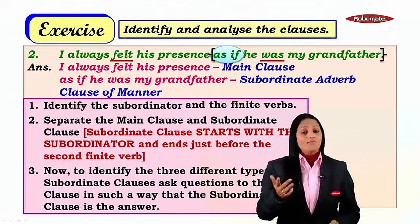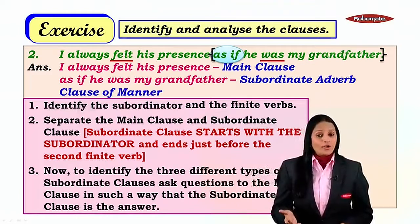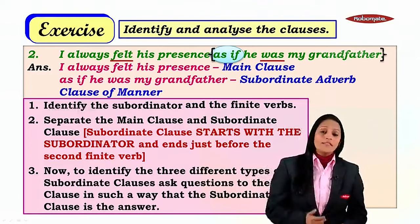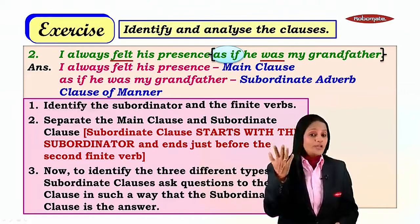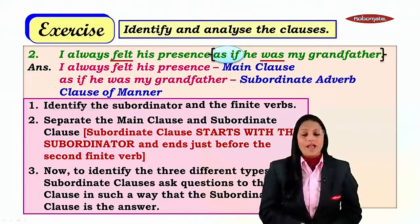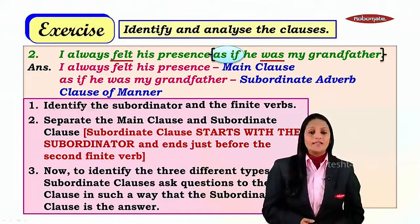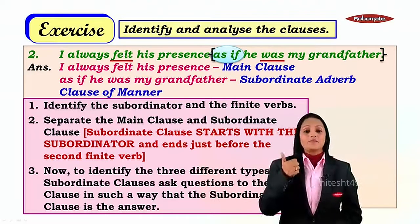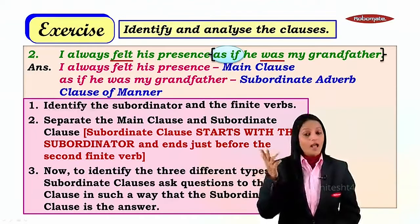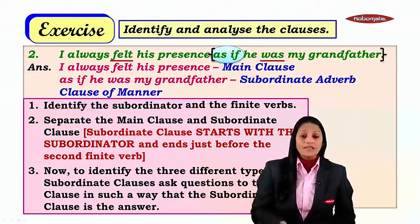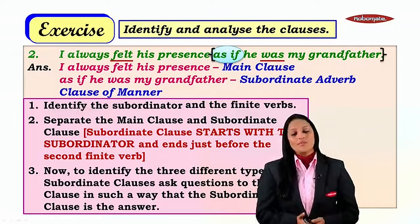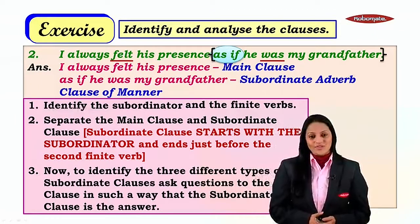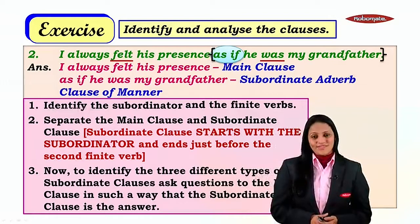So we have already seen how to identify main clause and subordinate clause, then noun clause, adjective clause, and three types of adverb clauses — adverb clause of time, place, and manner. How do we identify the remaining types of adverb clauses? We shall do that in just the next one. Thank you.